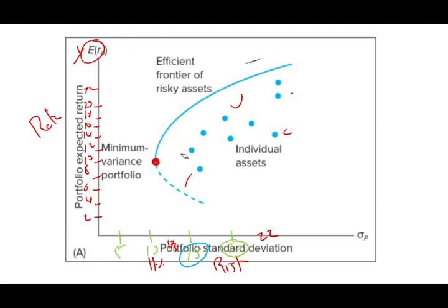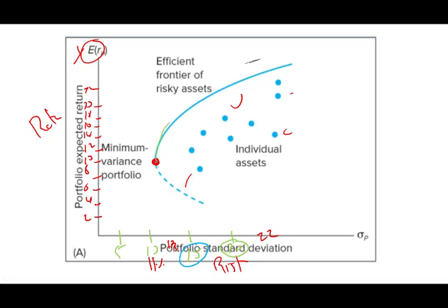The efficient frontier is only the upper portion of the curve, highlighted here. Any investment on this line is acceptable. A young individual might choose the high-risk, high-return area of the frontier, while an individual closer to retirement may prefer a lower-risk point. They are both on the efficient frontier — both considered efficient — just reflecting different risk preferences.